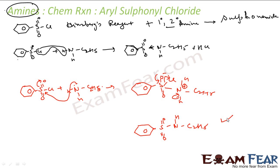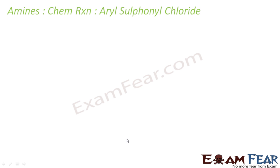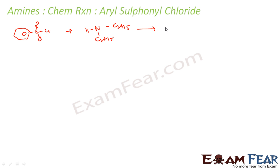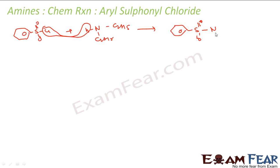For primary amine it has two hydrogens: one hydrogen came out and you got the product. Now let's do the similar reaction for secondary amine. Benzene sulfonyl chloride reacts with secondary amine — for example di-ethylamine — and the H and Cl go off, giving the product with N bonded to C2H5 and C2H5.